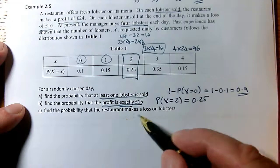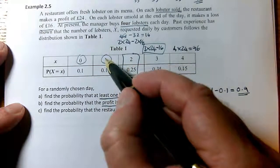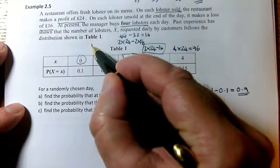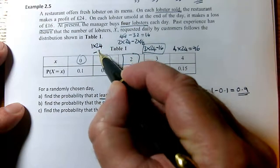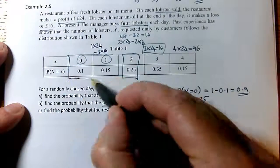And then we need to find the probability the restaurant makes a loss on lobsters. Well, I need to carry on working this out. If I only sell one lobster, then I make one lot of £24 profit, but I make three lots of £16 loss. I can see that's negative. So these two outcomes here,